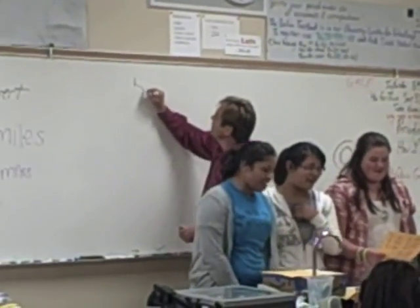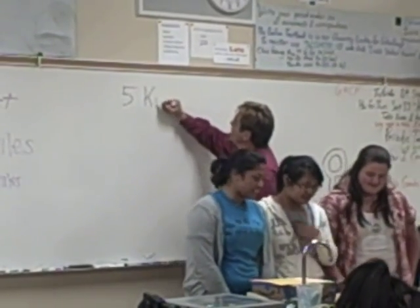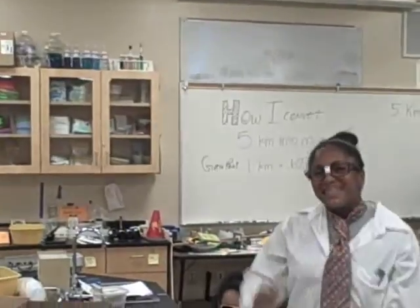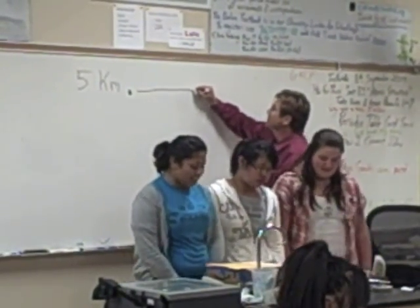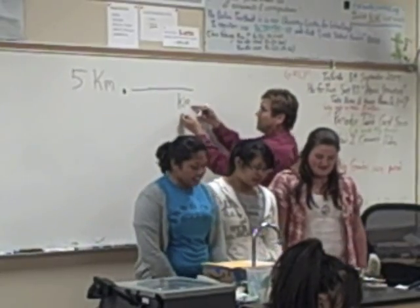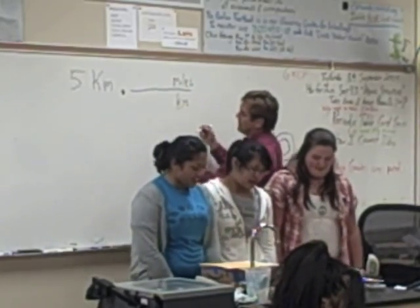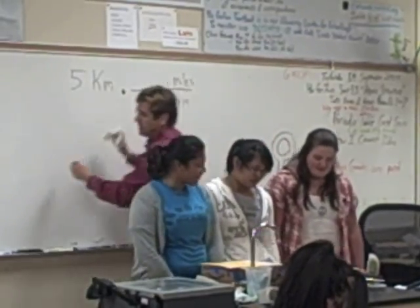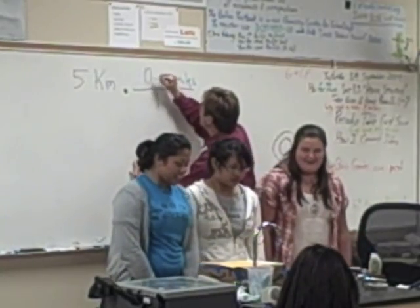First of all, I write the given and I simply have to write the units. Do I write the units? Yes, I write the units. Gotta write the units cause the units are so key. Then the mighty dot means multiply. The conversion factor starts with a horizontal line. Then into the bottom units I will cancel, and into the top I write the units I will move to. Then I write the numerals that make the top and bottom equal.